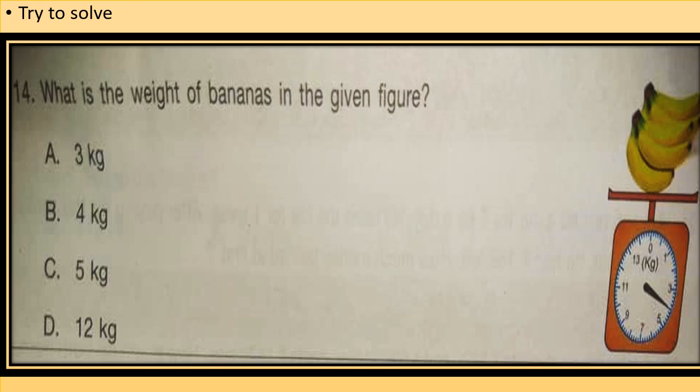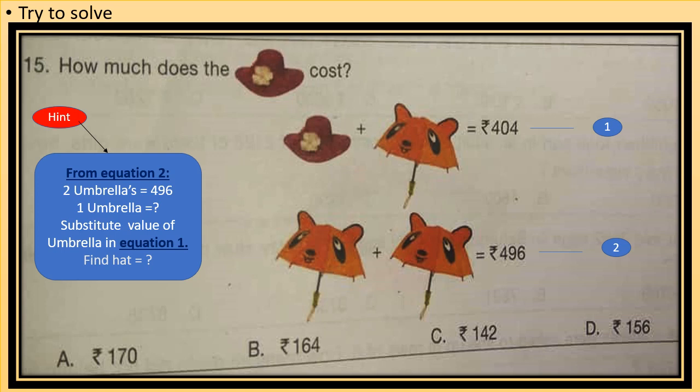Check answers at the end of the video. Question number 15: How much does the hat cost? See the given equations — hat plus umbrella equals Rs. 404; umbrella plus umbrella equals Rs. 496. See the hint and try to solve the question, then check the answer at the end of the video.